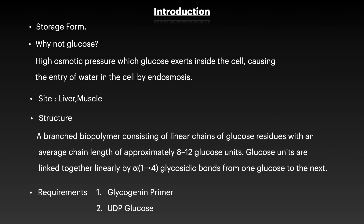For glycogenesis to take place, there are two basic requirements. First is the glycogenin primer — a polypeptide that has tyrosine residues, onto which glucose is added, glycosylating those tyrosine residues. The second requirement is UDP glucose, which serves as the nucleotide donor for adding glucose onto the glycogenin primer.